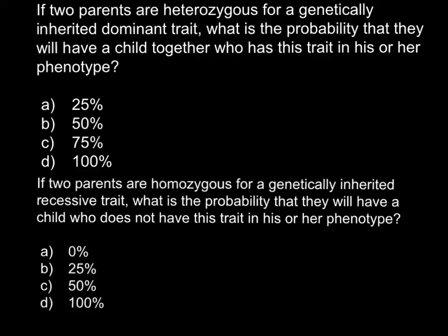So here is the first problem: if two parents are heterozygous for a genetically inherited dominant trait, what is the probability that they will have a child together who has this trait in his or her phenotype?